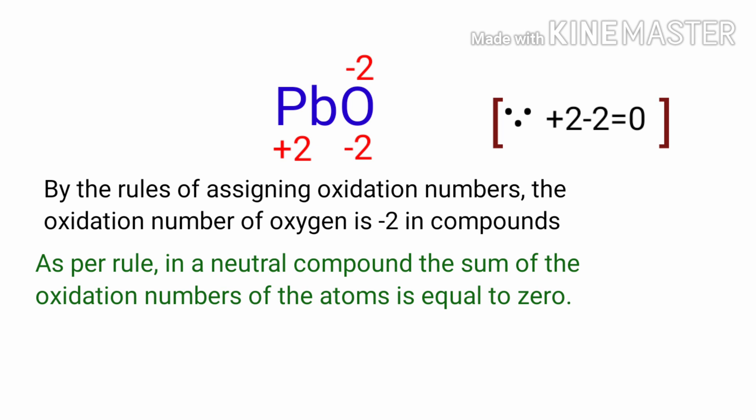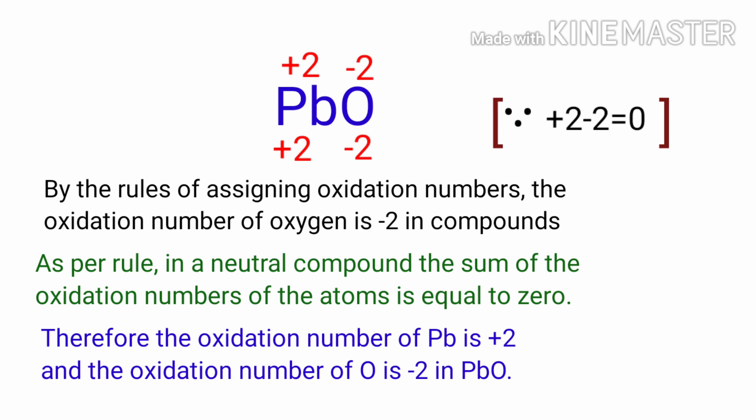So, we can write the oxidation number of Pb is plus 2. Therefore, the oxidation number of Lead is plus 2 and the oxidation number of Oxygen is -2 in Lead Monoxide.